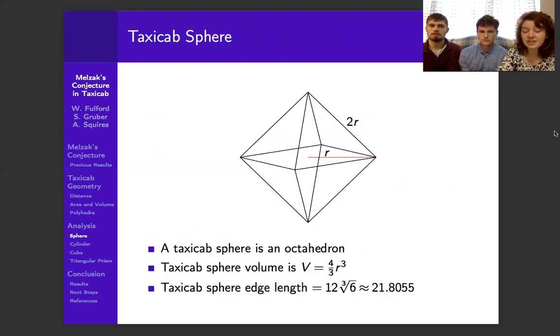So here's a taxicab sphere. It's an octahedron. And we analyzed the volume formula, and we got that the minimum edge length for unit volume is going to be around 21.